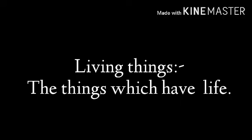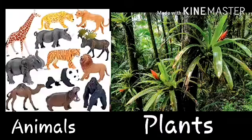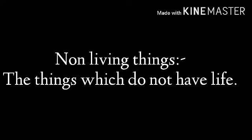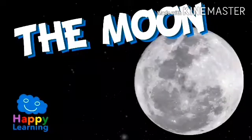There is another difference between things — they are living things and non-living things. The things which have life, which are alive, are called living things. Examples are plants and animals. The things which do not have life are called non-living things. Stars, moon, air, water, furniture, buildings, etc. are examples of non-living things.